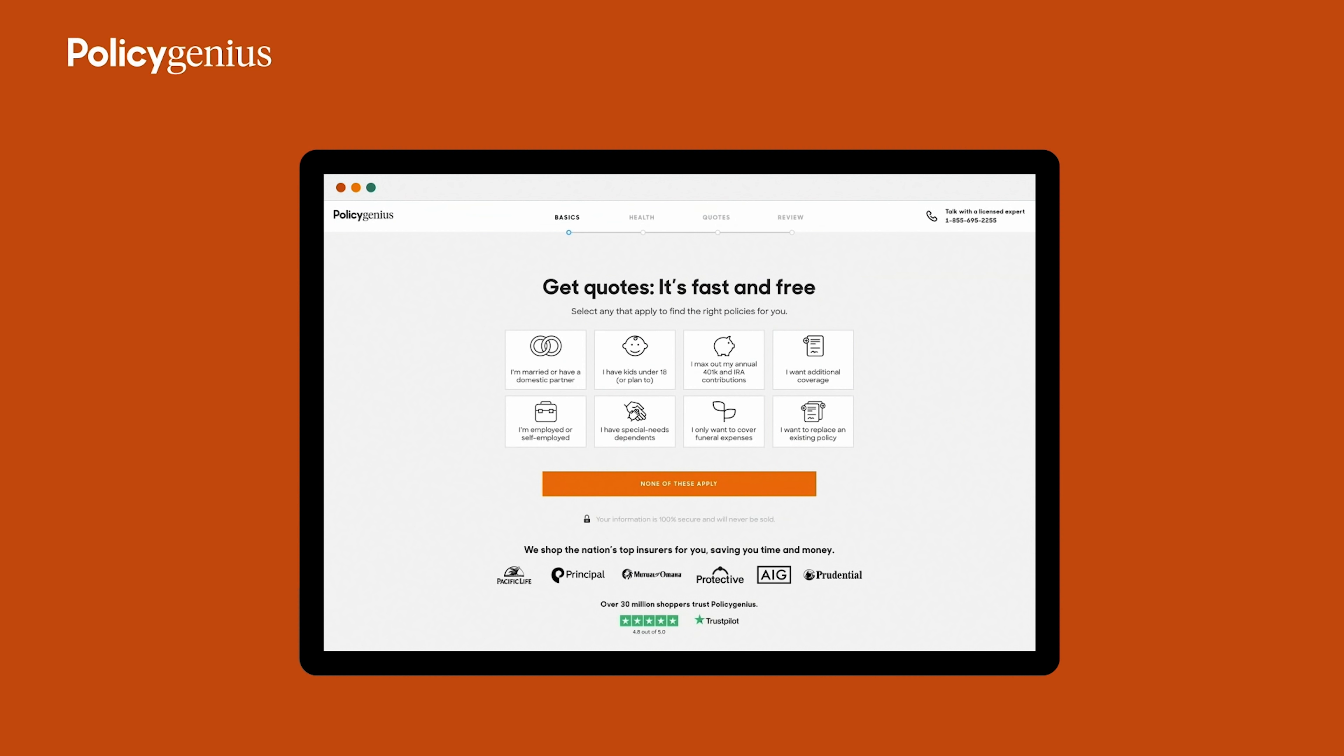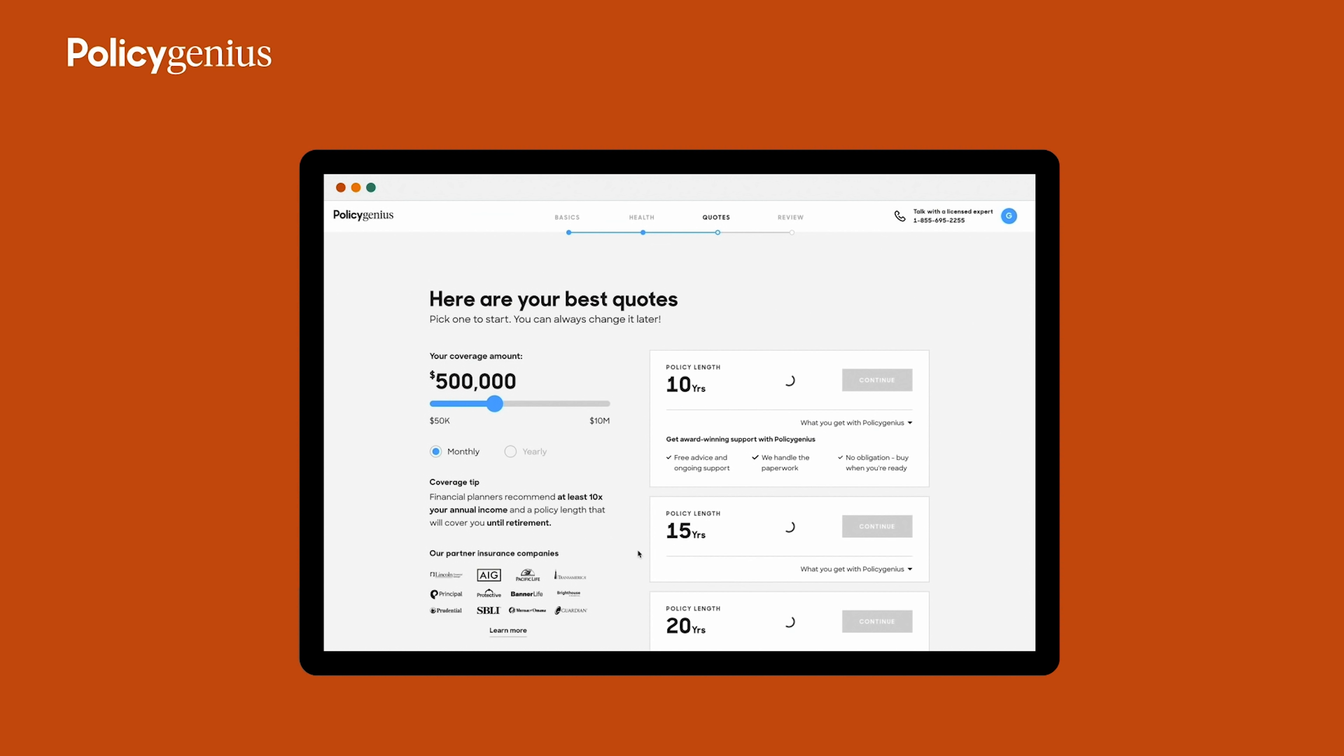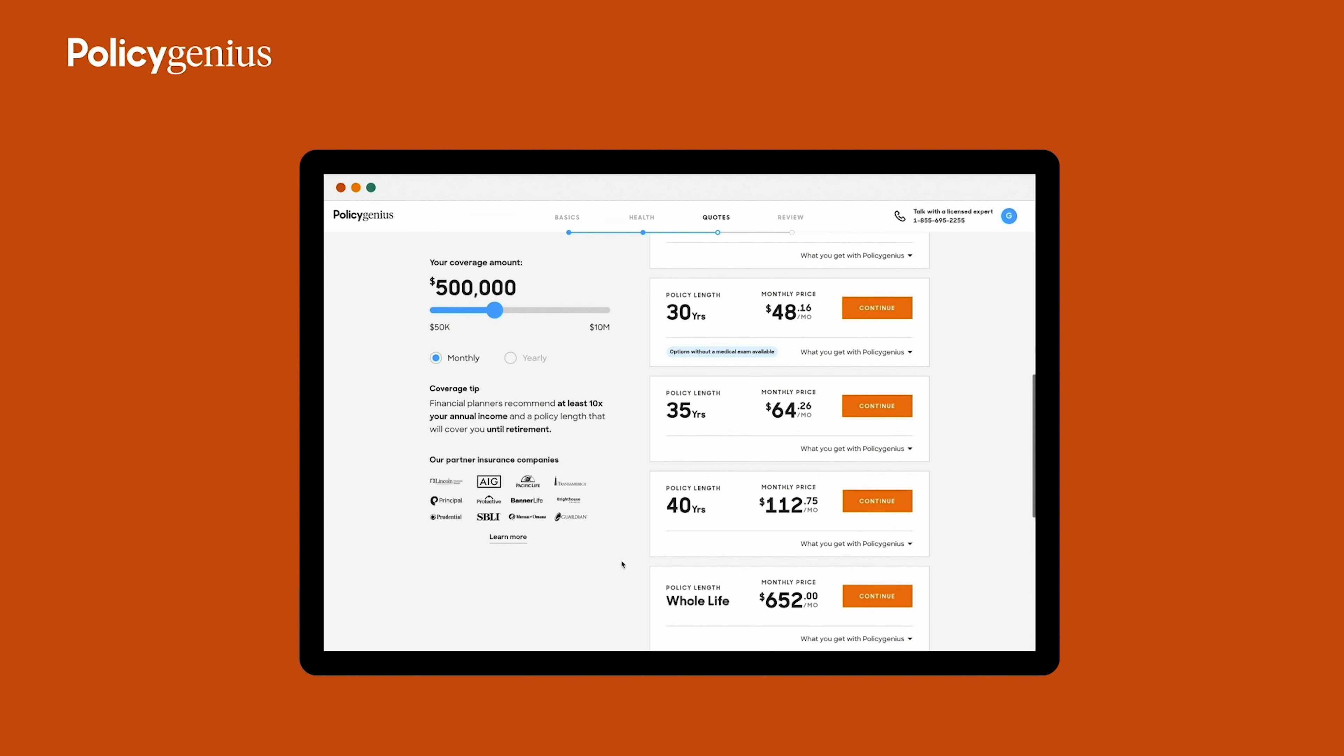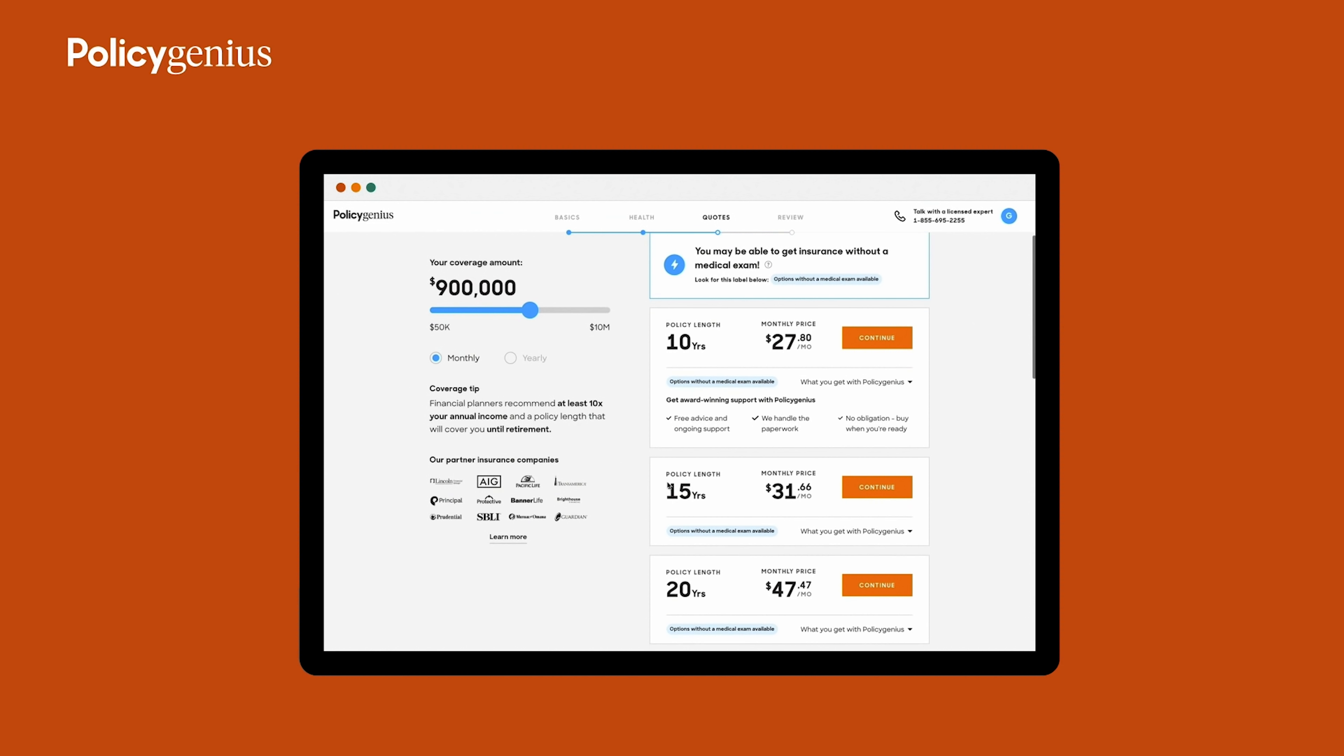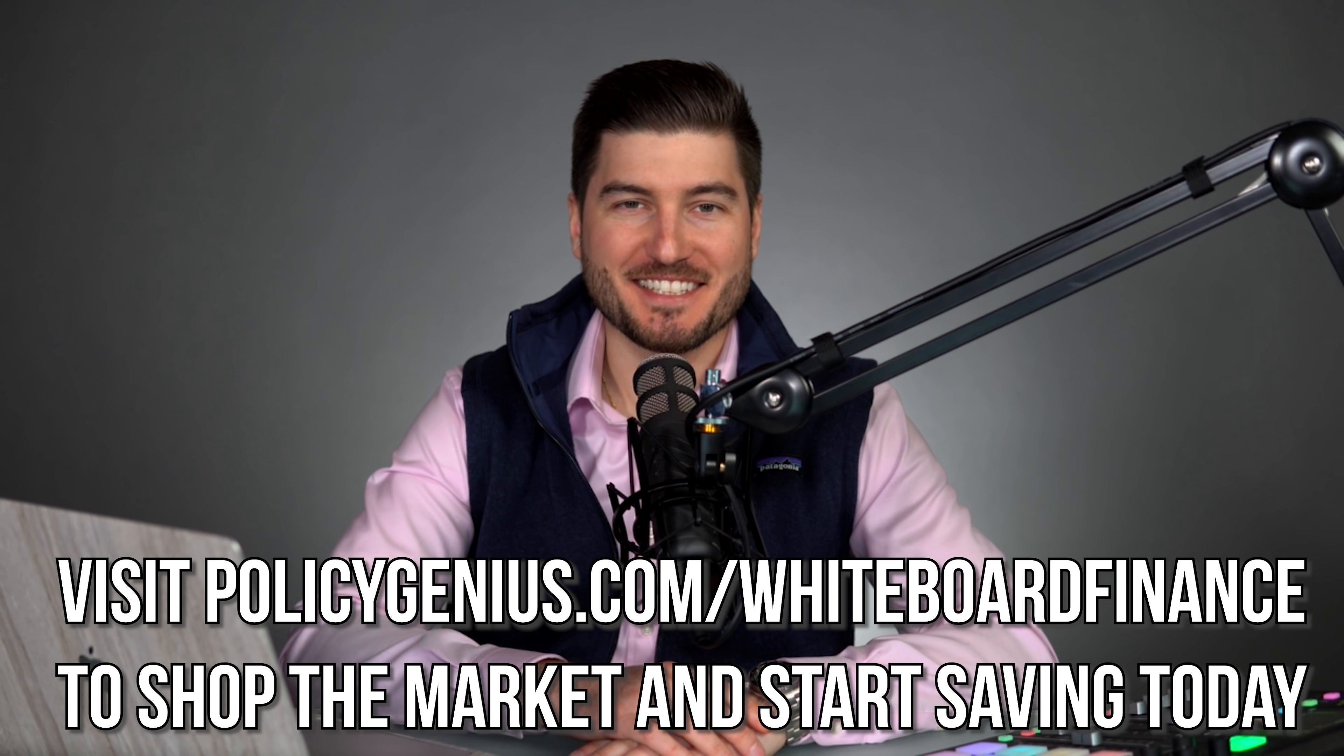So getting a quote with PolicyGenius is super simple. You basically just explain your situation to them with a couple clicks of the button. You click on find my free quotes, explain some information about yourself such as gender, date of birth, things like that. And then you can review quotes from that point. So you can have the coverage amount that you want. You can select monthly or yearly. You can adjust the policy length. It's super easy, super intuitive, and you don't have to be a rocket scientist in order to understand what these things mean. At that point, you just put in your information and voila, it's done. Visit policygenius.com slash whiteboardfinance to shop the market and start saving today.